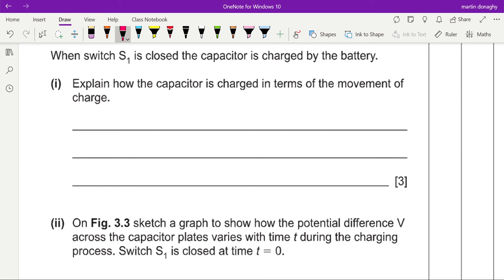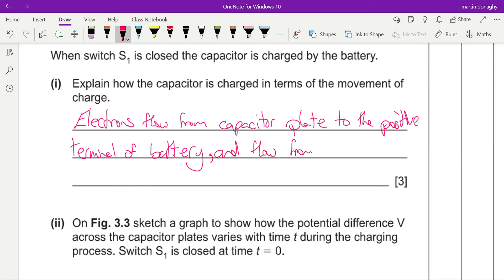So two marks here. First one is for describing that electrons flow from capacitor plate to the positive terminal of the battery. I mean, I would have given the second point first, but this is the way it is in the mark scheme. And electrons flow from the negative terminal of the battery to the other plate.